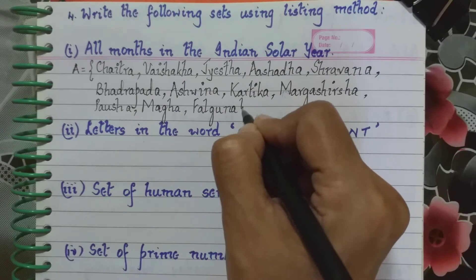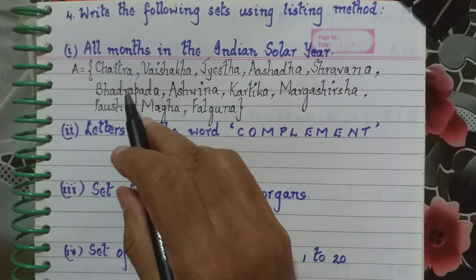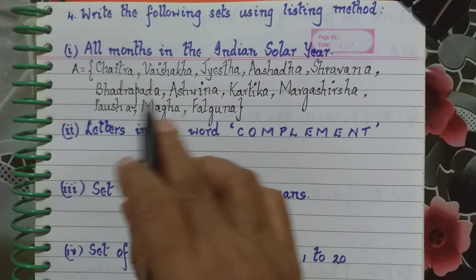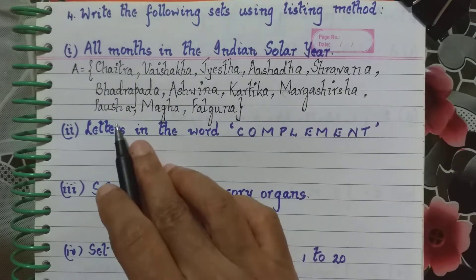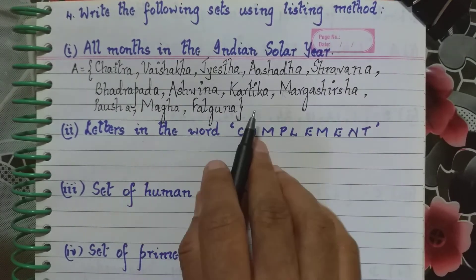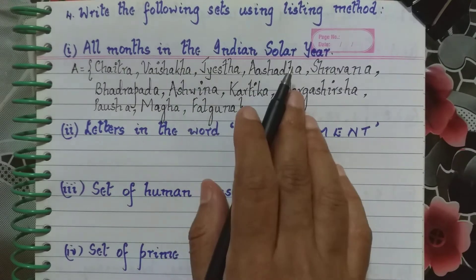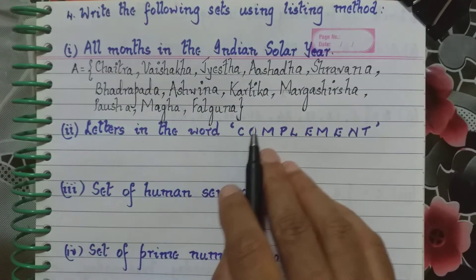So let us count whether we have completed all the 12 months: 1, 2, 3, 4, 5, 6, 7, 8, 9, 10, 11 and 12. So these are the months in the Indian solar year. Those are not familiar with it, well learn that. Okay.